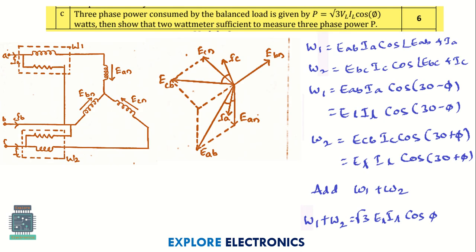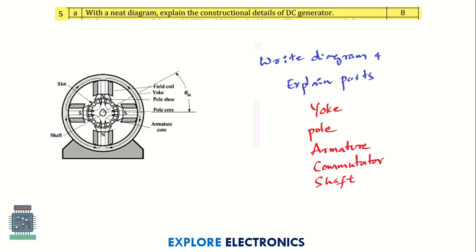Three-phase power consumed by a balanced load — show that two wattmeters are sufficient to measure this. This is a common question repeatedly asked in exams. You can derive it to easily get six marks. Then, with a neat diagram, explain the constructional details of a DC generator — the diagram and each component needs to be explained.